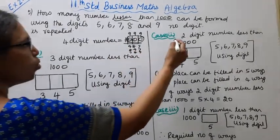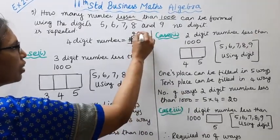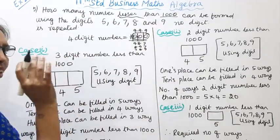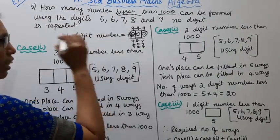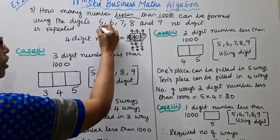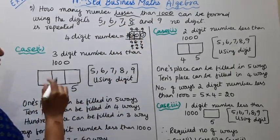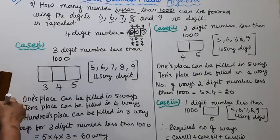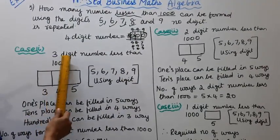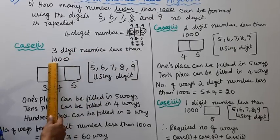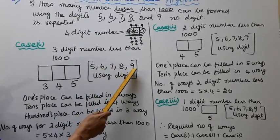We have 3 cases. The digits we use are 5, 6, 7, 8, and 9. Case 1: 3-digit numbers less than 1000. The available digits are 5, 6, 7, 8, and 9.